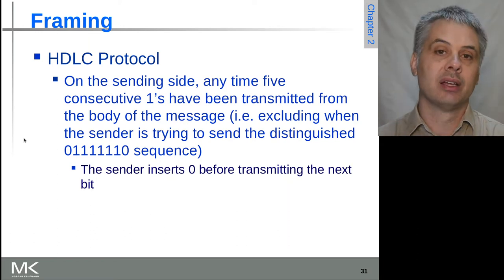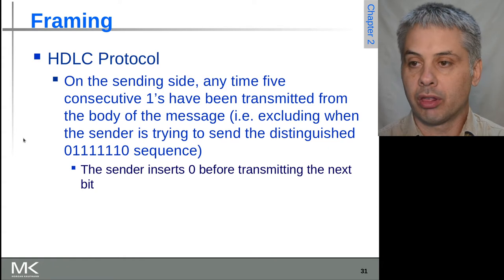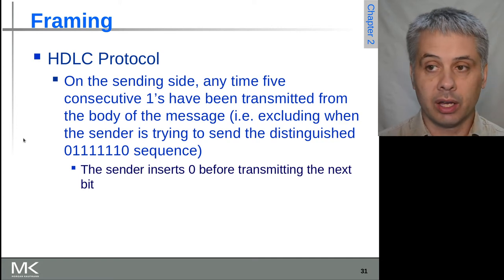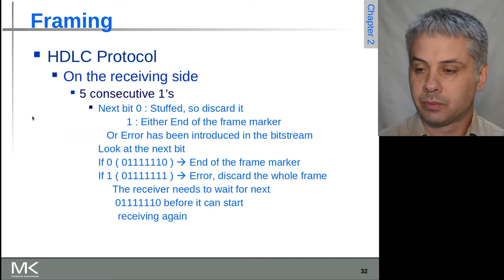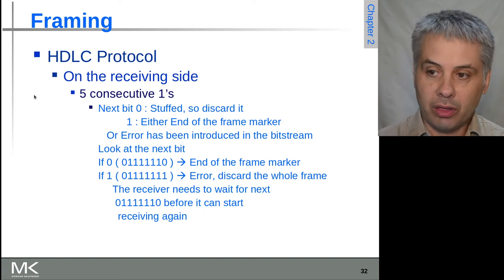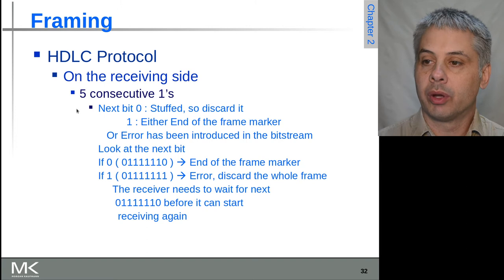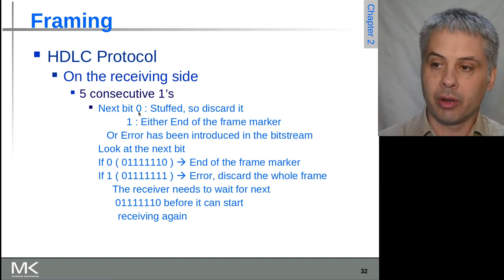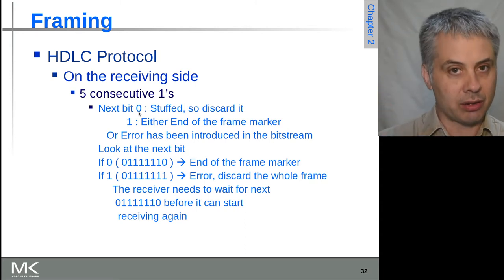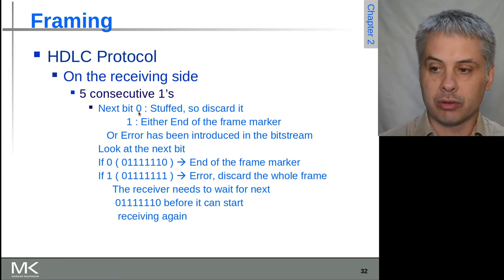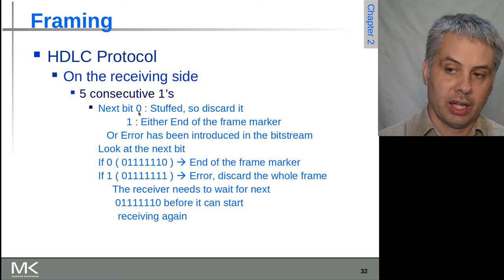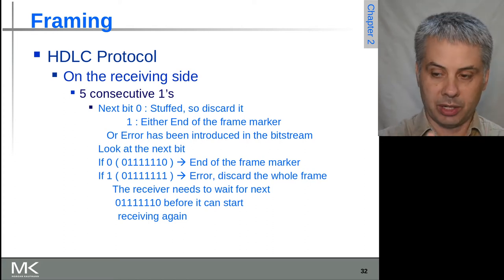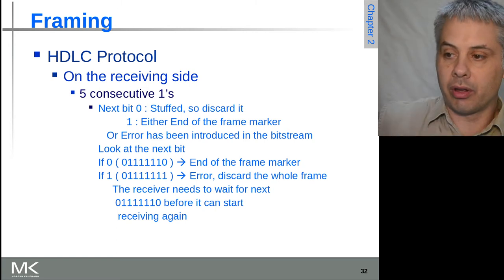There's a small efficiency cost that may be incurred with this approach. It depends on the exact values of the data you're sending as to whether it will be more or less efficient. On the receiving side, we look at the last five bits. If they're all ones and the next is a zero, we remember the next bit actually is a data bit, not one of these special markers. If it was a one, then it's the end or start of frame marker.